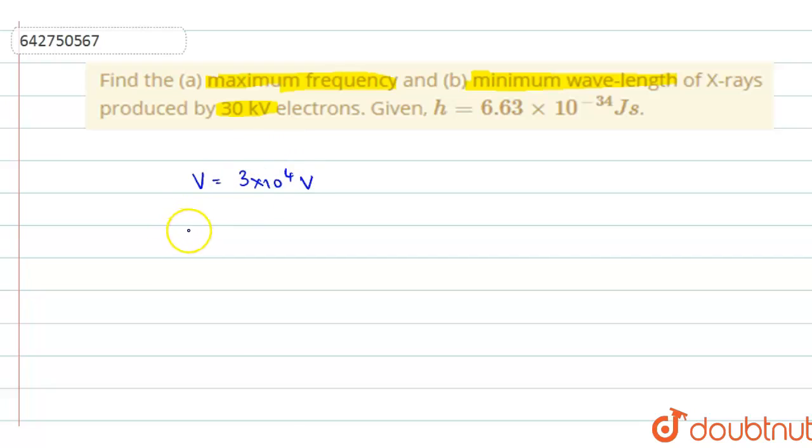With this you can find out the energy of the electrons. Right, so energy of the electrons will be equal to E is equal to 3 into 10 power 4. So the energy of the electrons is 3 into 10 power 4 joules. Now the charge on each electron, since they are talking about electron, the charge on each electron is 1.6 into 10 power minus 19 coulomb.